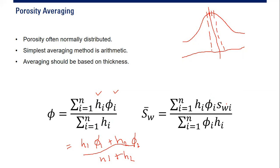Similarly, average water saturation is calculated as the summation of (thickness × porosity × water saturation) for each layer, divided by the summation of (thickness × porosity). For example: (h₁ × φ₁ × Sw₁ + h₂ × φ₂ × Sw₂ + ...) divided by the summation of (hᵢ × φᵢ).